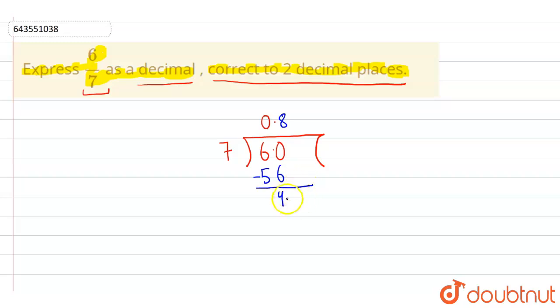Now since there is nothing below so we will put one 0 over here and bring that 0 below. So this will become 40 now.